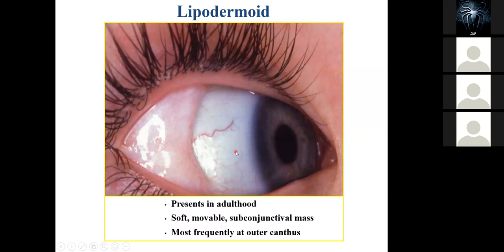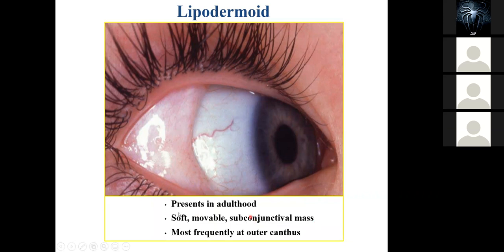This one here is what we call a lipodermoid. It's a soft tissue covering the whole corner of the eye, sort of creeping onto the eye. A lipodermoid is usually present in adults. They are soft, movable subconjunctival masses. Unlike the epibulbar dermoid, which is a small, soft, roundish lesion, the lipodermoid is more like a blanket rolling over the eye — a movable tissue.